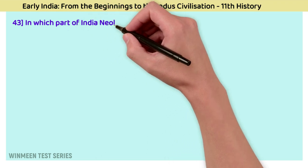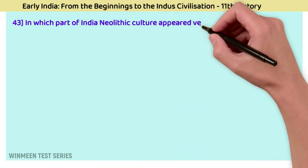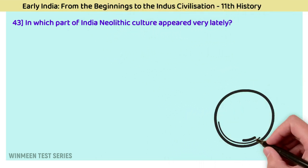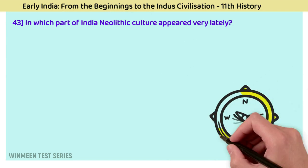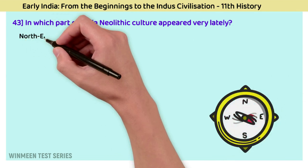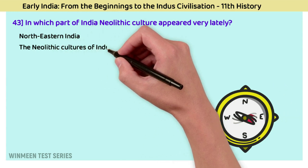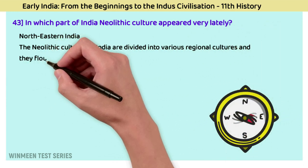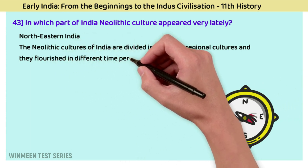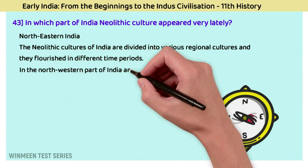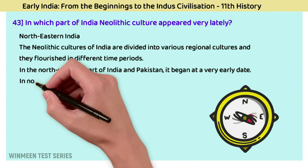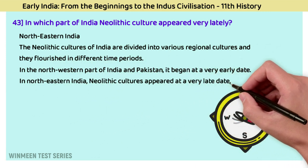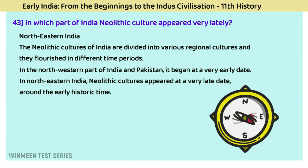Question 43: In which part of India did Neolithic culture appear very late? The answer is North-Eastern India. The Neolithic cultures of India are divided into various regional cultures flourishing in different time periods. In the north-western part of India and Pakistan, Neolithic culture began at a very early date. In North-Eastern India, this Neolithic culture appeared at a very late date, around the early historic times.